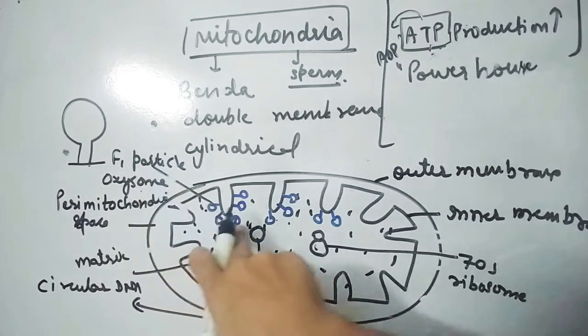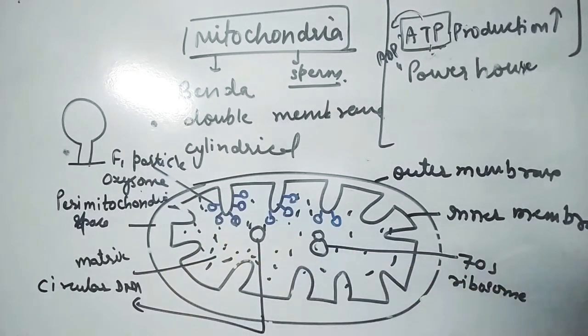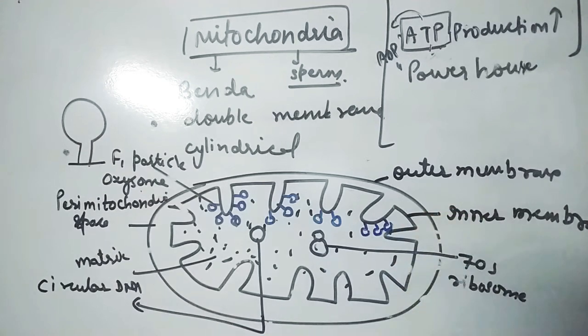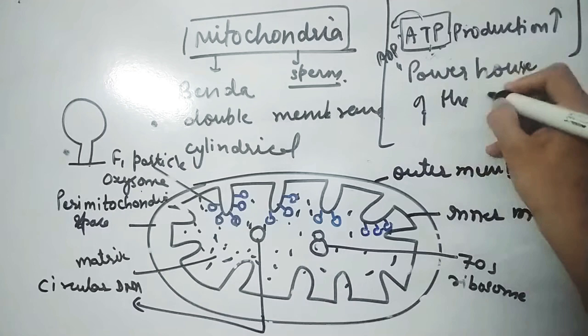F1 particle produces more ATP. More ATP means more energy, hence powerhouse of the cell.